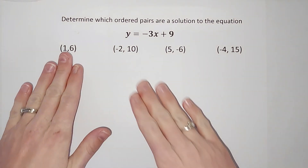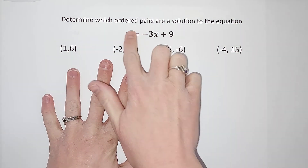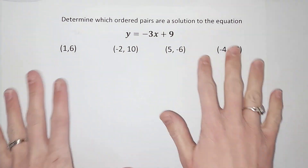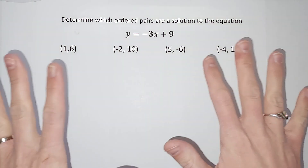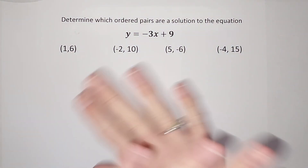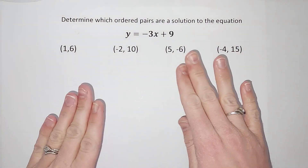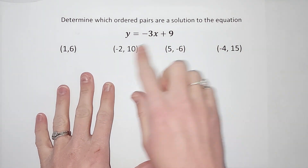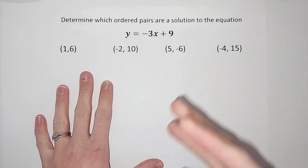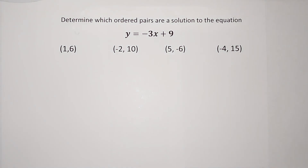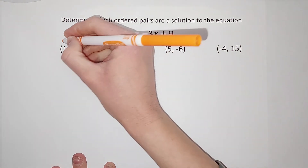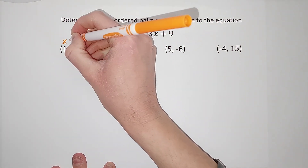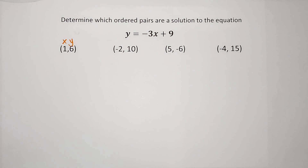We are being asked which of these ordered pairs are solutions to this equation. We could graph this equation as a line — if you're not to that point in your math journey yet, don't worry, it's coming. We're not doing it right this minute, but it could be a line and we're wondering if these are points on that line. The first number in an ordered pair is considered x, and the second one is considered y.